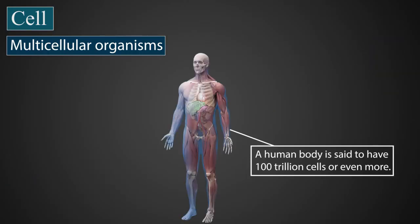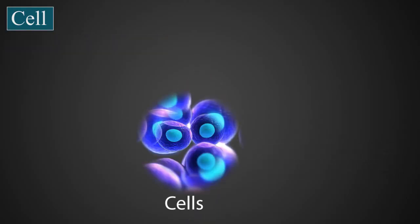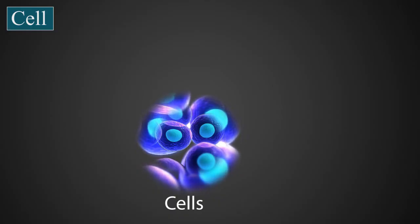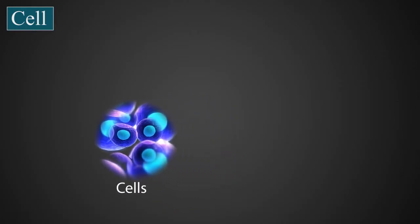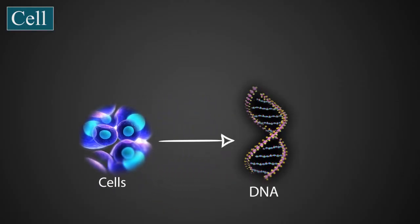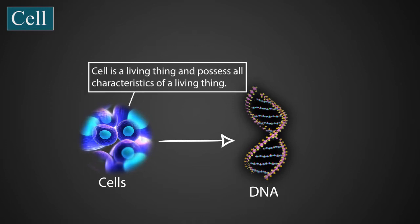A human body is said to have a hundred trillion cells, or even more. All types of cells have some common characteristics that make them living things. They all contain DNA as a heritable genetic material, and they can also reproduce. You need to remember that a cell is a living thing, and it possesses all characteristics of a living thing.